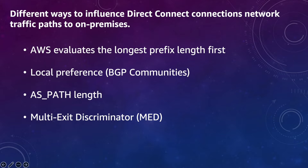So what are the different ways you can influence your network traffic? First, you can use the longest prefix length. Across two network traffic paths you can have one longest prefix CIDR over one traffic path versus another, and that's how people can make primary or secondary paths.